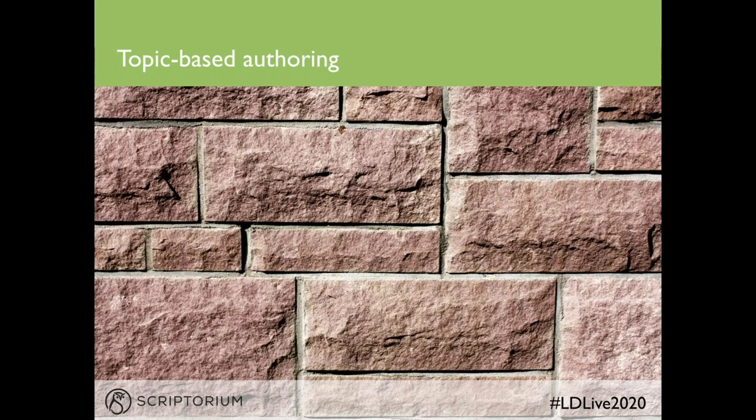Now let's talk about topic-based authoring. Topic-based authoring is creating content where one file or unit contains information about a single topic or answers a single question, so that these topics can be assembled into documents for publication. This is different from chapter-based or book-based authoring, such as you'll find in FrameMaker or Word, where a single file may cover multiple different topics. Topic-based authoring is inherent in the structure of DITA.